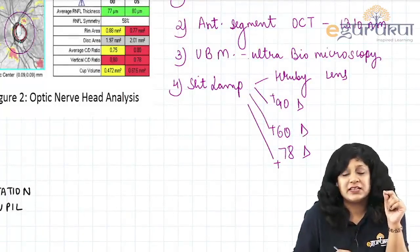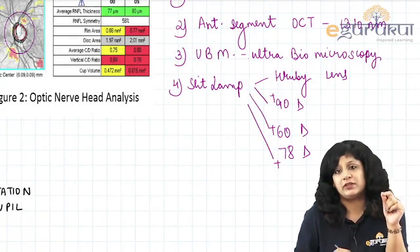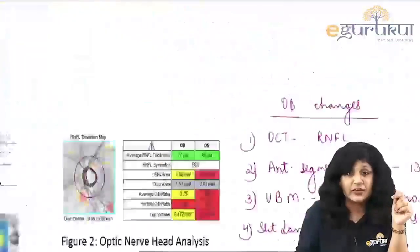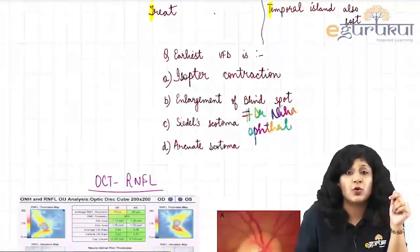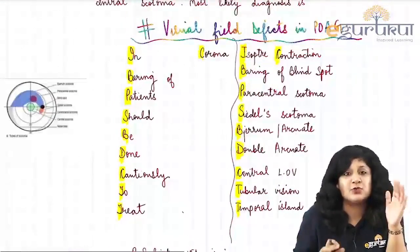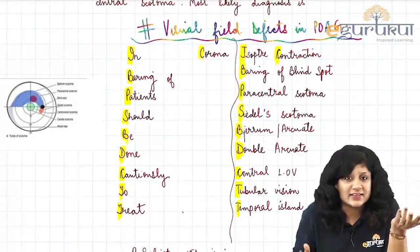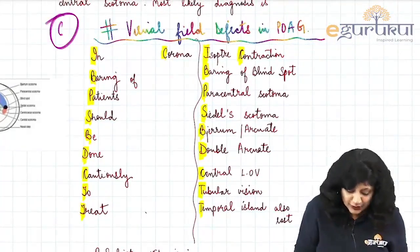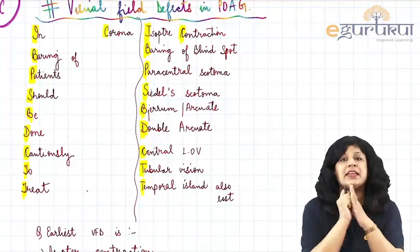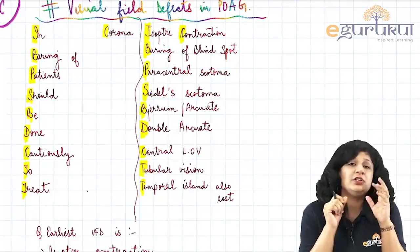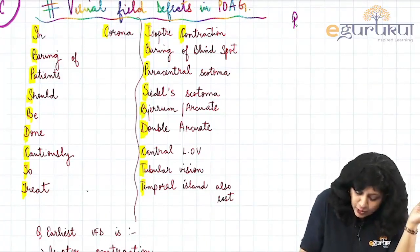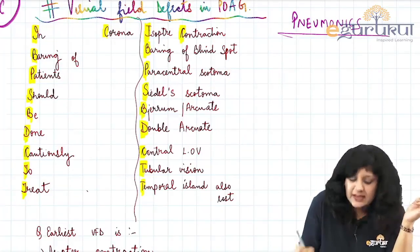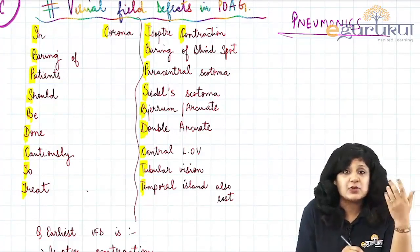After the optic disc changes, the third important thing in the assessment of glaucoma is visual field defects. I think this is the most interesting part. I have tried to devise a unique mnemonic for the sequence of visual field effects taking place in primary open angle glaucoma — in these COVID times, using the word 'corona.'